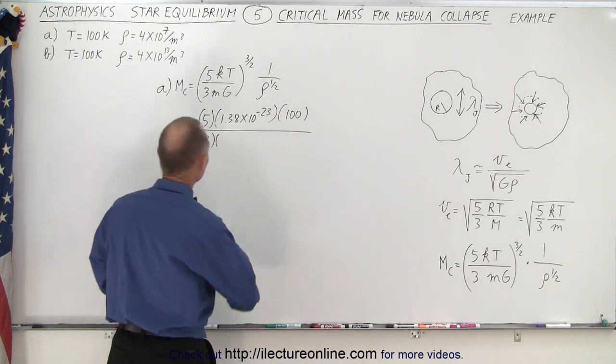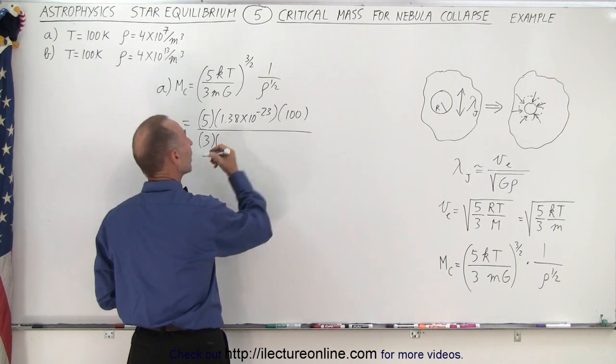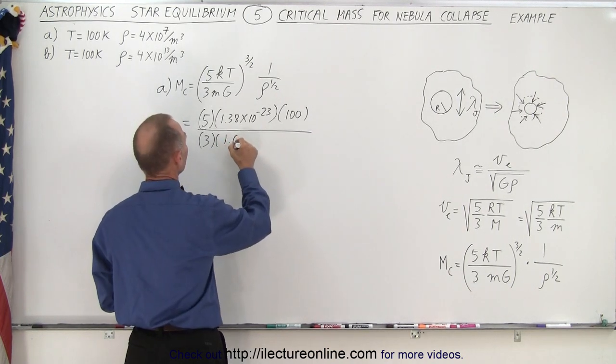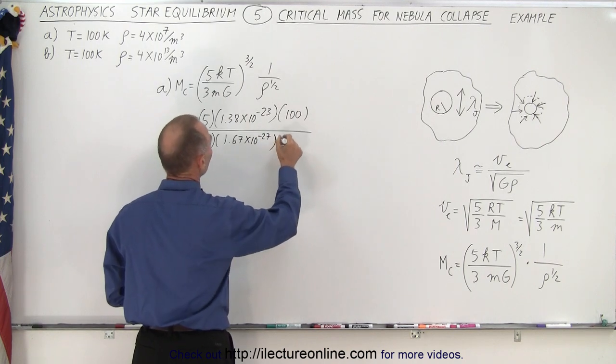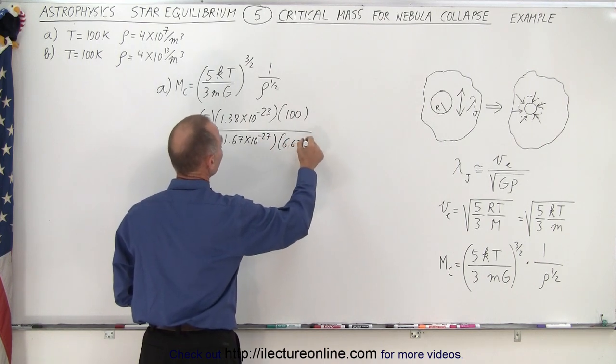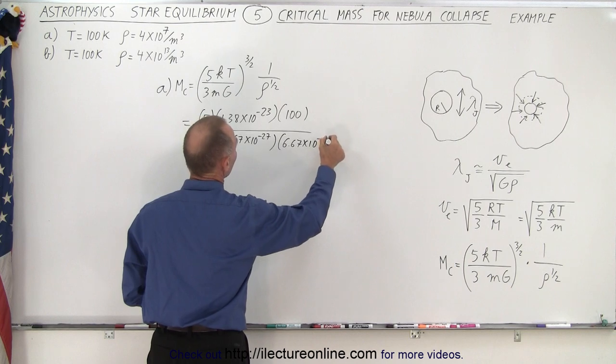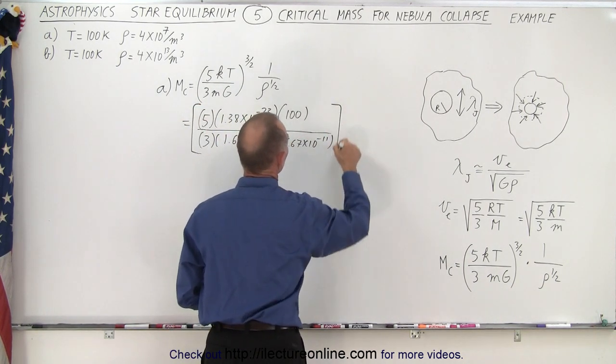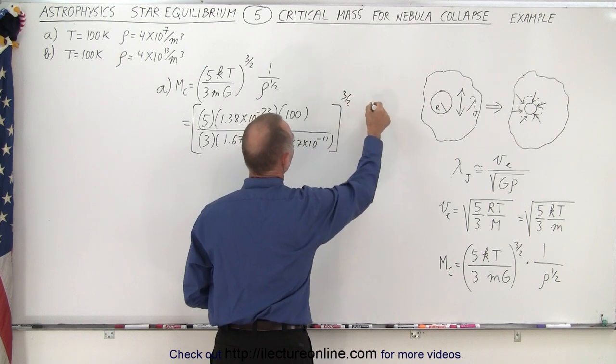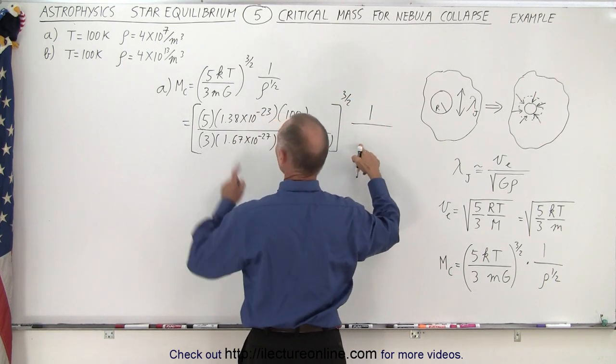We just need the molar mass which is one atomic mass unit, that's 1.67 times 10 to the minus 27 kilograms. G is 6.67 times 10 to the minus 11 and we take the whole thing and raise that to the 3 halves power.